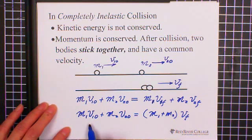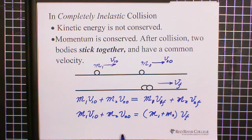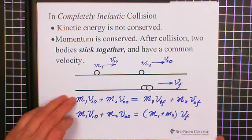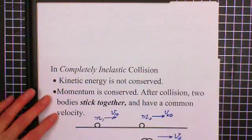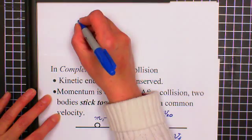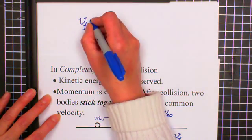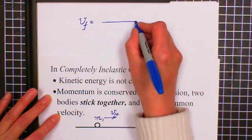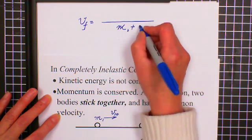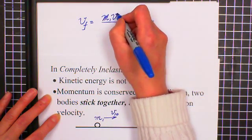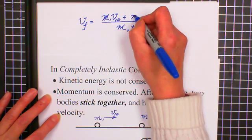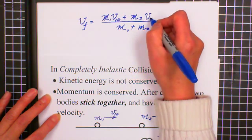So if we're given M1, M2, V1 initial, V2 initial, and we're looking for V final, we can manipulate the formula to get the expression. We will have V final equals M1 V1 initial plus M2 V2 initial divided by M1 plus M2.